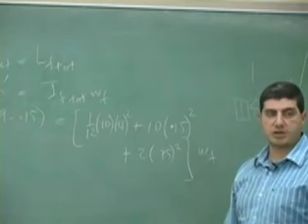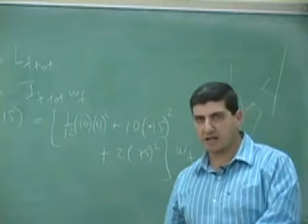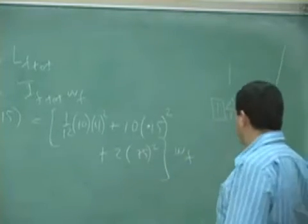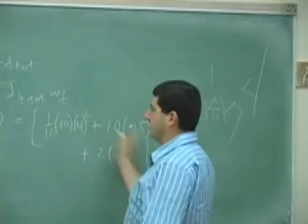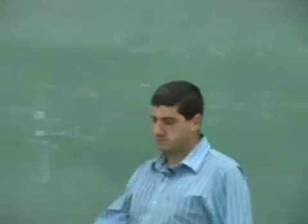All of this, what are we doing it for? So, we can find the final rotational speed of the rod object system. Okay? Final rotational speed. So, you do all this. You do all that.